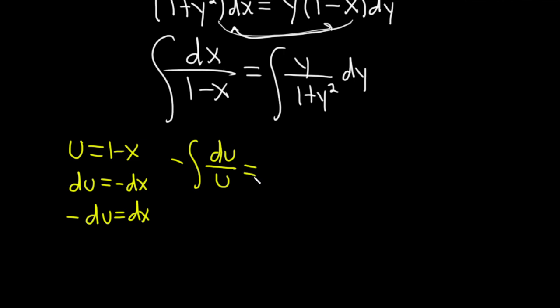And that's equal to... Over here, we can make another substitution. Let's use w. We'll let that be equal to 1 plus y squared. So then dw is going to be the derivative, so simply 2y dy.